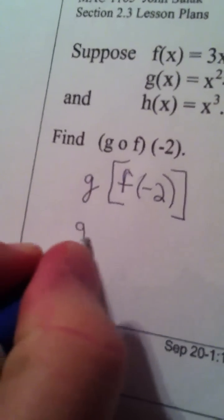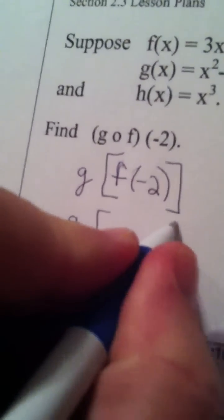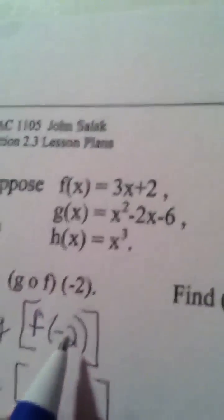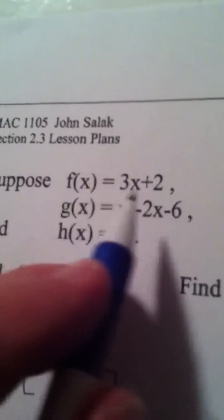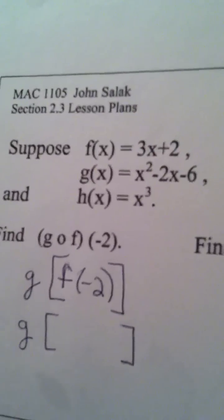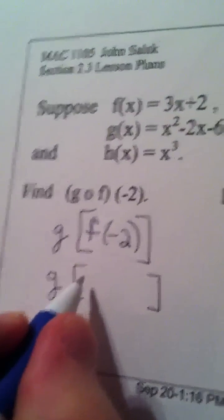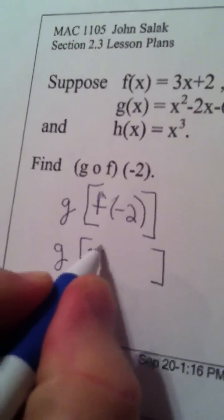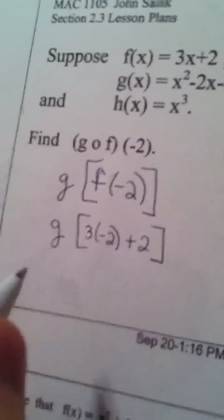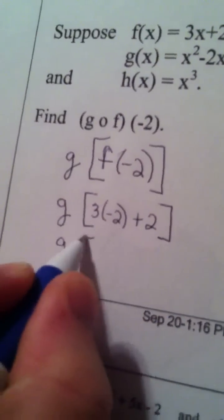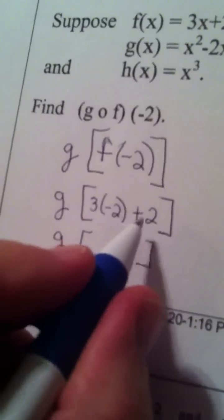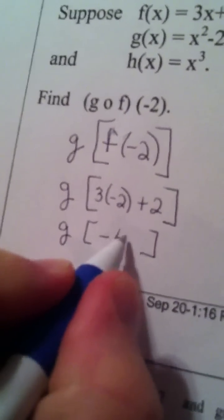So I don't start with function g. I let it alone right now. And to find f of negative 2, I go up to function f, which is the y value, and I plug in negative 2. So I have 3 times negative 2 plus 2. And that is negative 6 plus 2, which is negative 4.